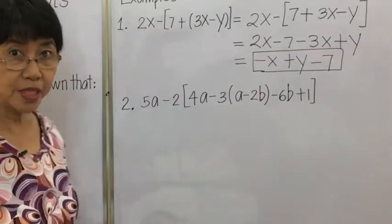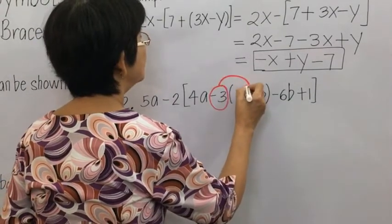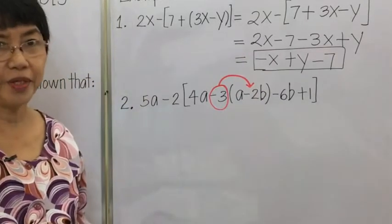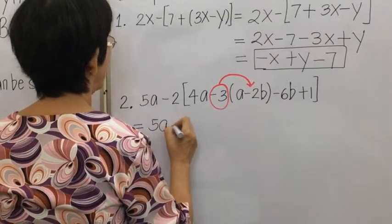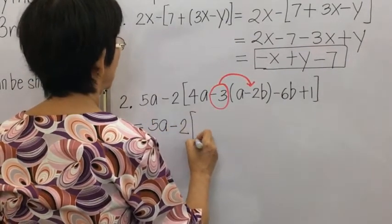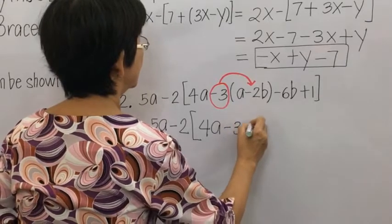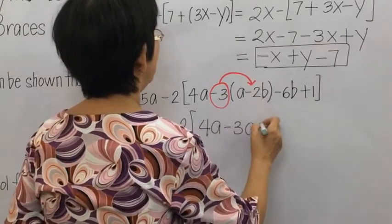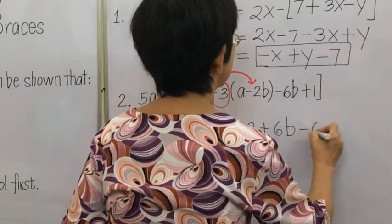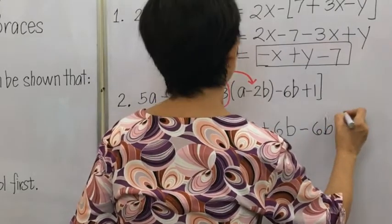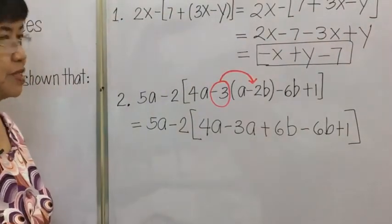We remove the innermost grouping symbol by distributing negative 3 inside, and copy the rest first. This gives 5A minus 2, quantity 4A minus 3A, then plus 6B minus 6B plus 1. Then we combine the similar terms inside the brackets.